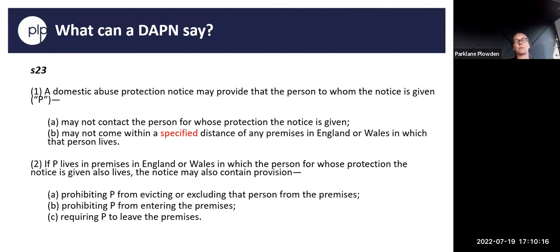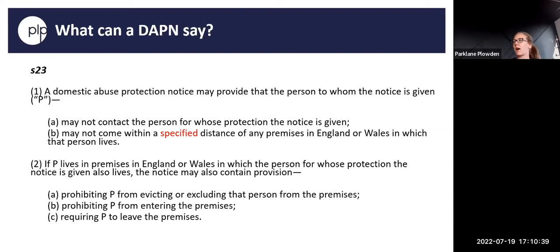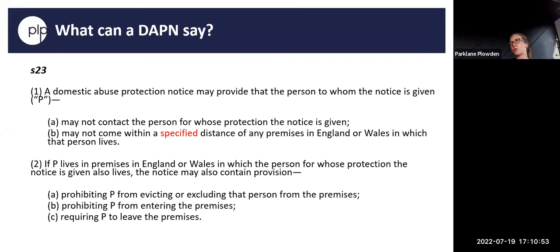What can the notice cover? It's very similar to a non-molestation order. It can include that the person (P) cannot contact the person named in the order — for example, the wife or a relative — and may not come within a specified distance of any premises in England or Wales in which the person lives. You have to specify the distance on the order, whether that's 50 metres or 100 metres. It's just like a normal station order.